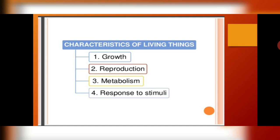Characteristics of living things. In order to be called living, any organism must show these four characteristics: it must show growth, reproduction, metabolism, and response to stimuli.